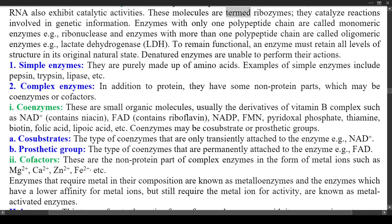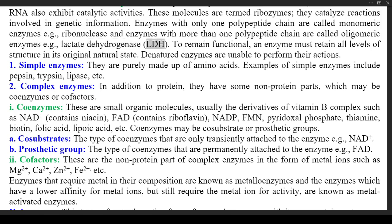Some RNA molecules that act as catalysts are termed ribozymes; they catalyze reactions involved in genetic information. Enzymes with only one polypeptide chain are called monomeric enzymes, e.g., ribonuclease. Enzymes with more than one polypeptide chain are called oligomeric enzymes, e.g., lactate dehydrogenase (LDH). To remain functional, an enzyme must retain all levels of structure in its original natural state. Denatured enzymes are unable to perform their actions.